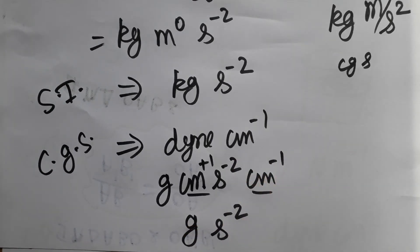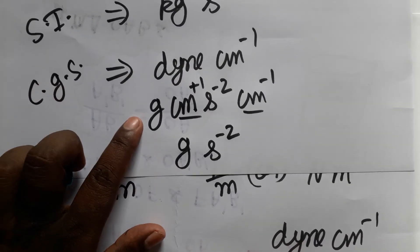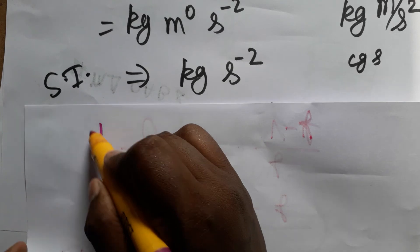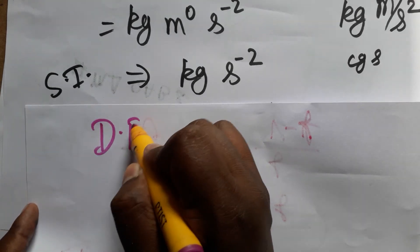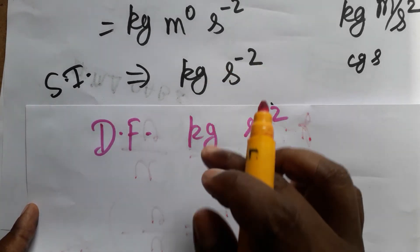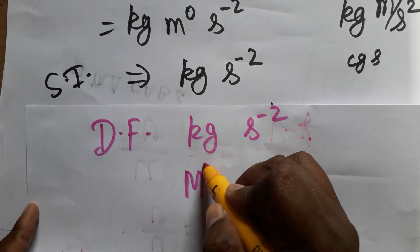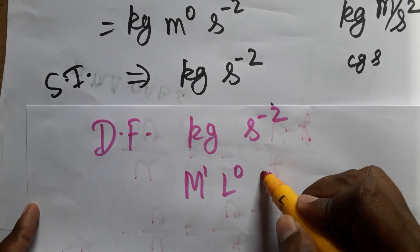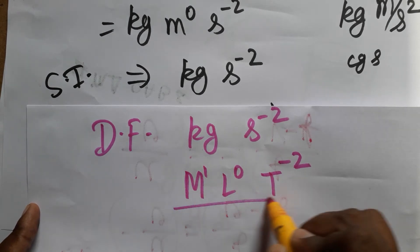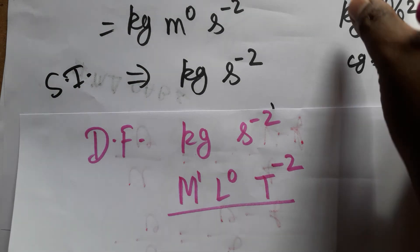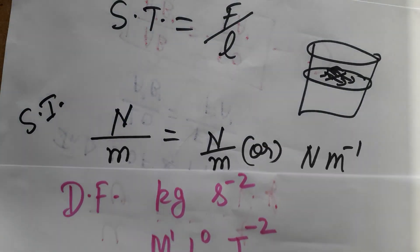Now for the dimensional formula of surface tension. Since the SI unit is kg·s⁻², we express it in dimensions: kg corresponds to mass M¹, there is no length so L⁰, and time gives T⁻². Therefore the dimensional formula for surface tension is M¹L⁰T⁻².